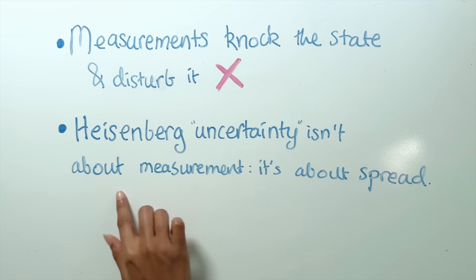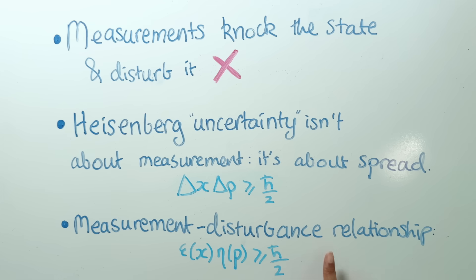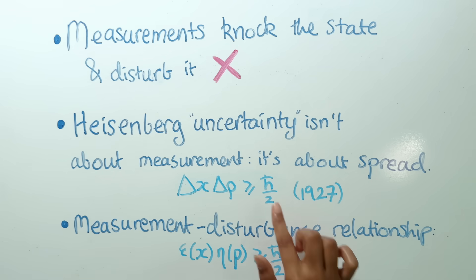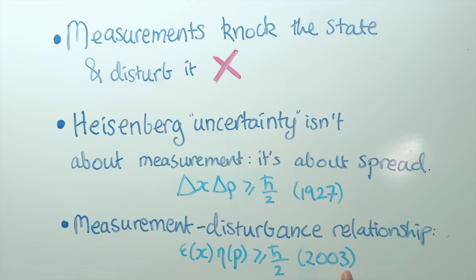Heisenberg Uncertainty isn't about measurement — it's about the spread of a particle. Or at least that was the version of the Heisenberg Uncertainty Principle that I was taught at university. But there's a third version called the Measurement-Disturbance Relationship, which has an almost identical looking equation. While the original equation was proposed in 1927, the measurement-disturbance relationship was only proved in 2003, and it's still not widely known among physicists.